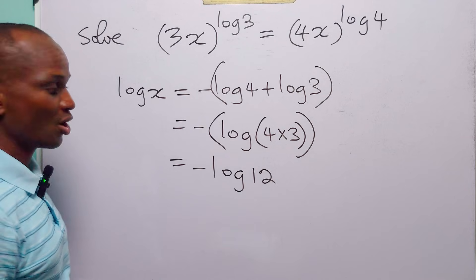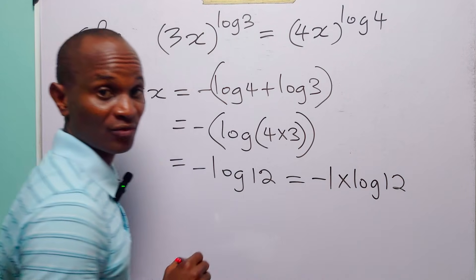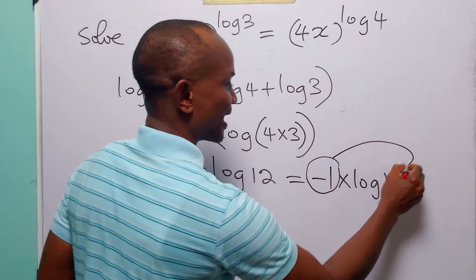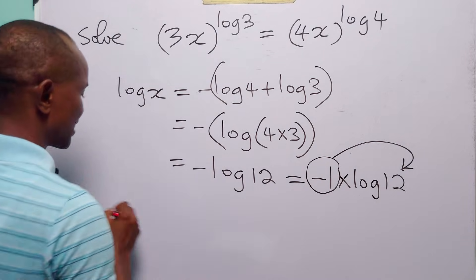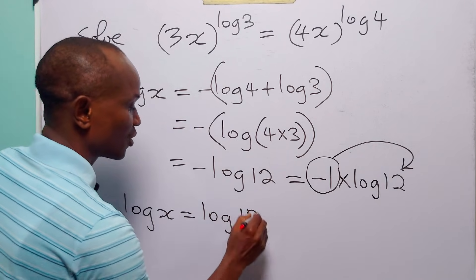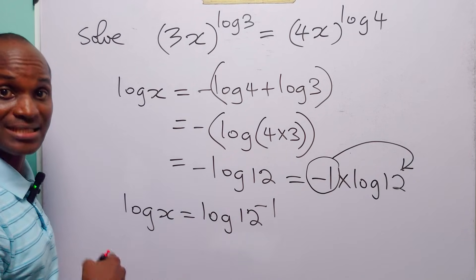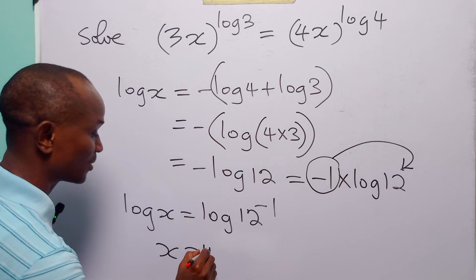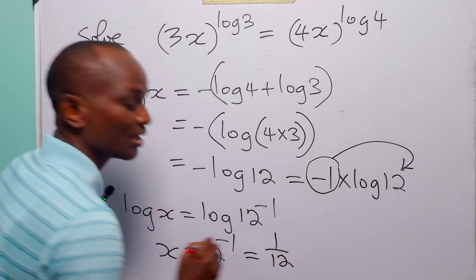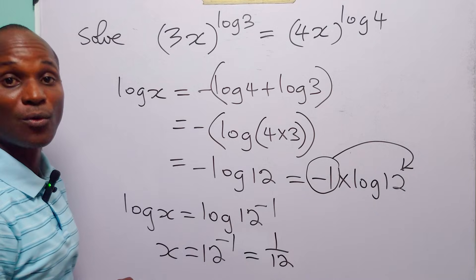We apply the power rule. Since minus log 12 is the same as minus 1 times log 12, we take the multiplier minus 1 up to become the exponent of 12. So log x equals log 12 to the power minus 1. Comparing both sides, x equals 12 to the power minus 1, which is simply 1 over 12. The value of x that satisfies this logarithmic equation is 1 over 12.